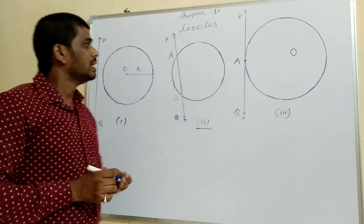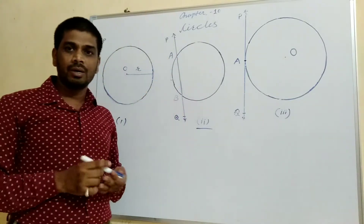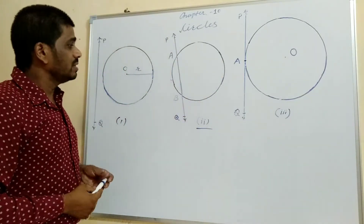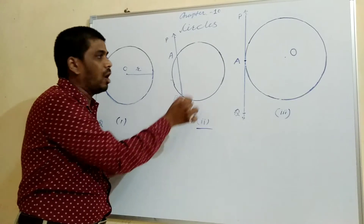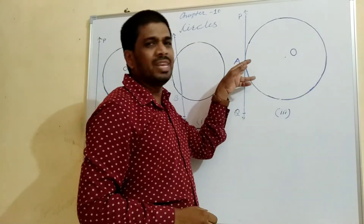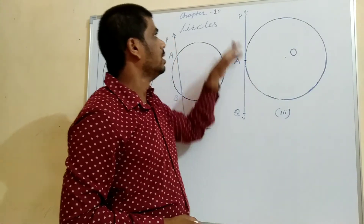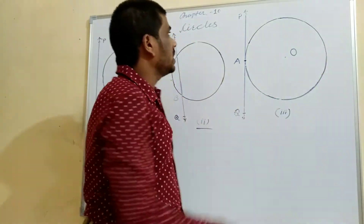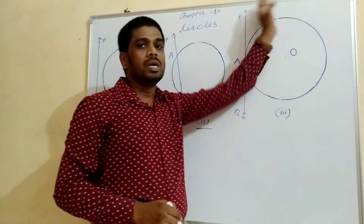In the second case, there are 2 common points A and B of a line PQ and the circle. Then in this situation, the line PQ is called the secant of a circle. In the third case, there is only one common point of line PQ and the circle, so PQ is called the tangent to the circle.